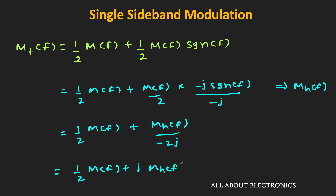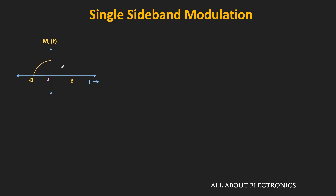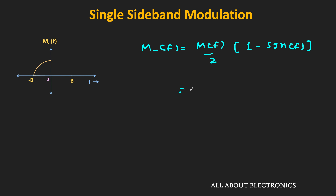In this way we found the expression for M+(f). Similarly, M−(f) = M(f)·(1/2)·[1 − sgn(f)], which gives M−(f) = (1/2)·M(f) − (j/2)·Mh(f).